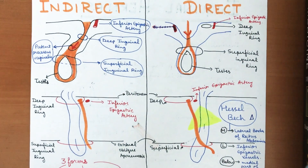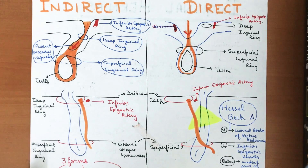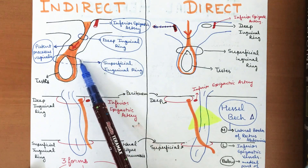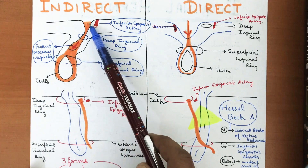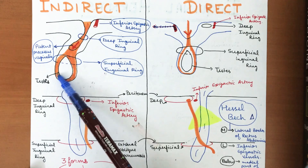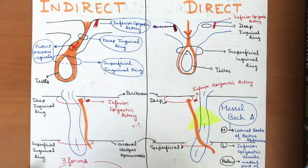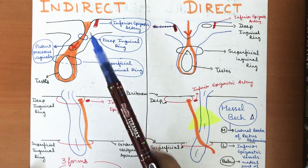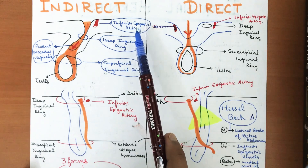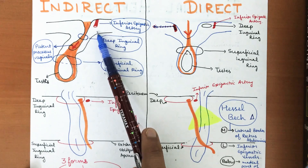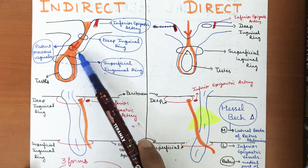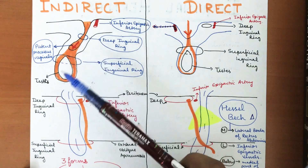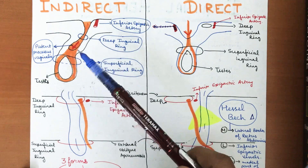In indirect hernias, abdominal contents such as small intestine or omentum protrude through both the deep and superficial inguinal rings and pass through the inguinal canal. The key anatomical landmark is the inferior epigastric artery — in indirect hernia, the hernial sac is present laterally to the inferior epigastric artery.